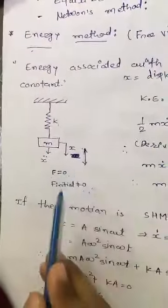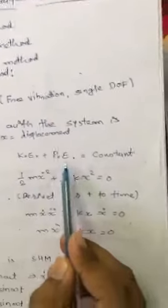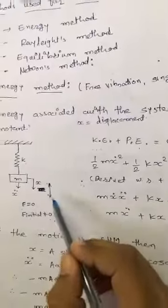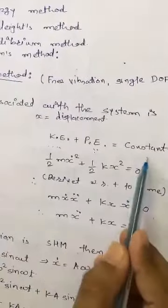Here k is the stiffness of the spring, m is the mass, x is the displacement, and f initial is given which is not equal to zero. According to the energy method, when the body is in motion there are two types of energies: kinetic energy and potential energy. According to the energy conservation law, the total energy is constant, so total kinetic energy plus total potential energy is equal to constant, which we can write as equal to zero when differentiated.